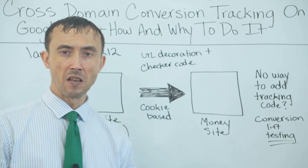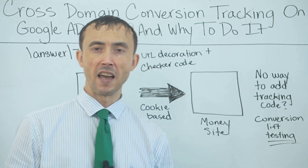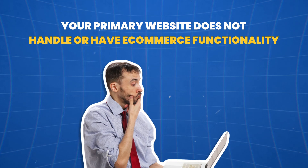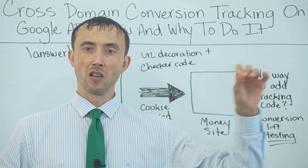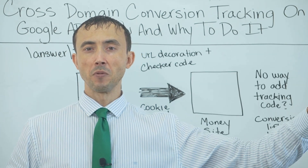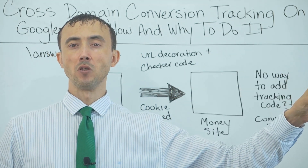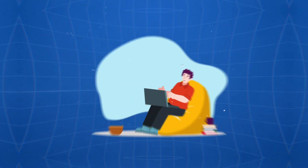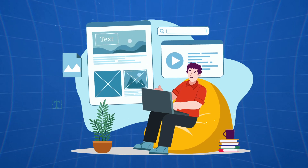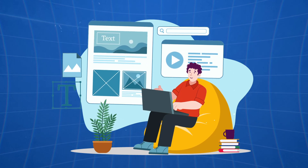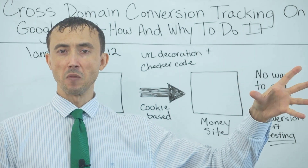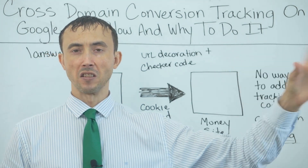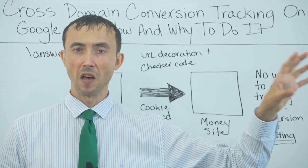One application where this comes into play is when your primary website does not handle e-commerce functionality. You have to handle e-commerce checkouts on a third-party website. In that case, you're going to have to set up cross-domain tracking, and you'll need to put your tracking code on that website. Generally speaking, even if they don't let you put code on their checkout, they'll let you put it on a success page and you can complete the loop that way.